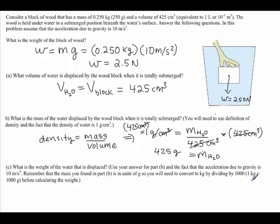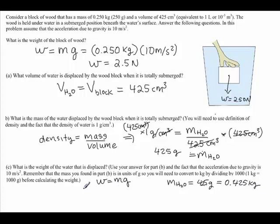The next question asks: what is the weight of the water that is displaced? We know weight equals mass times gravity, but the mass must be in kilograms. Taking 425 grams and dividing by 1,000 gives us 0.425 kilograms. So the weight of the displaced water is 0.425 kilograms times 10 meters per second squared, which equals 4.25 newtons.